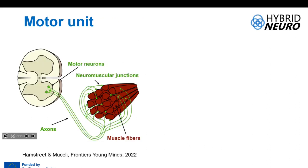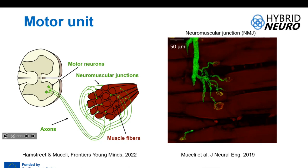In one muscle we have many fibers, and the axon of each motor neuron synapses onto many fibers at a junction that we call the neuromuscular junction. This is just a cartoon, but on the right side you can actually see an image taken from an animal model, showing how the nerve — the green part — synapses onto the muscle fibers, which are the reddish ones.